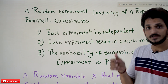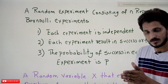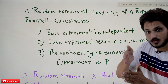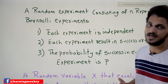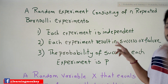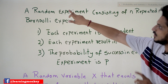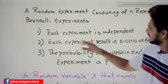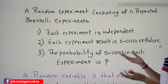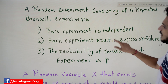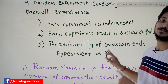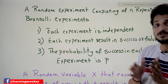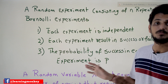The conditions are: first, each experiment is independent. Independent means one event occurring should not affect the probability of the second event — those two events are called independent events. This is very important to remember in binomial distribution. Second, each experiment results in success or failure, because we are following Bernoulli experiments with only two outcomes. Third, the probability of success in each experiment is p.